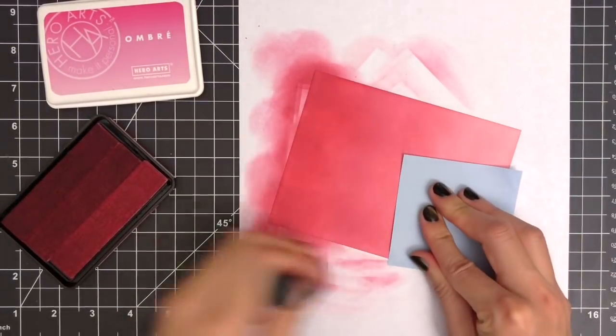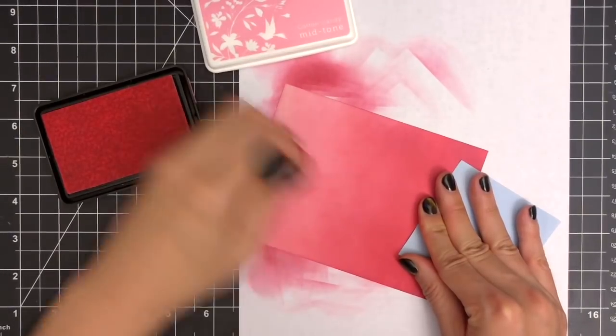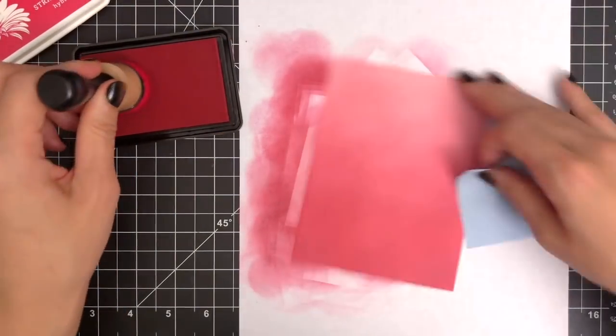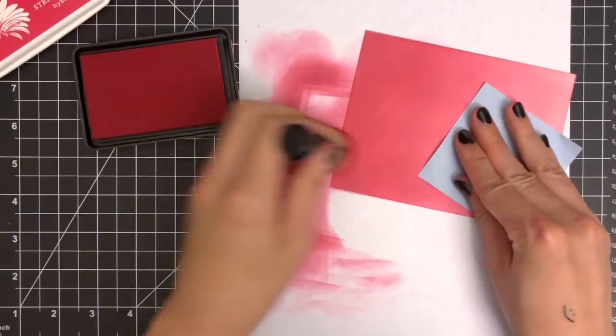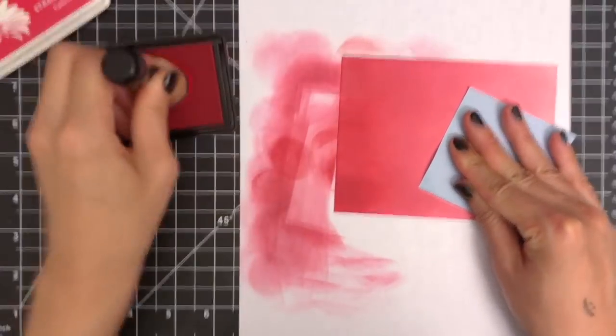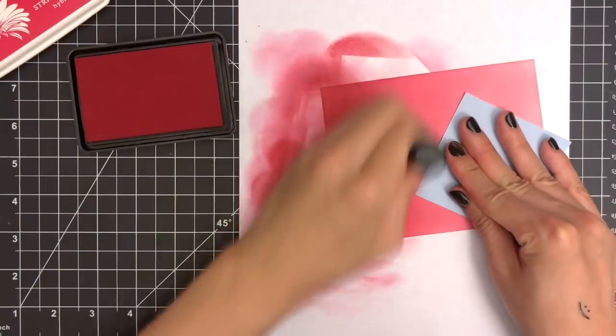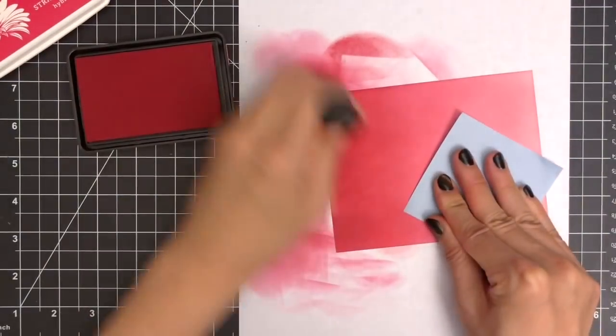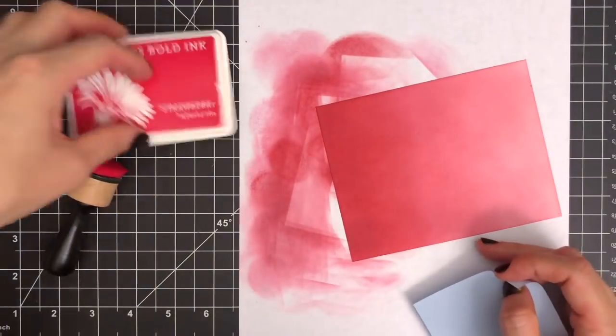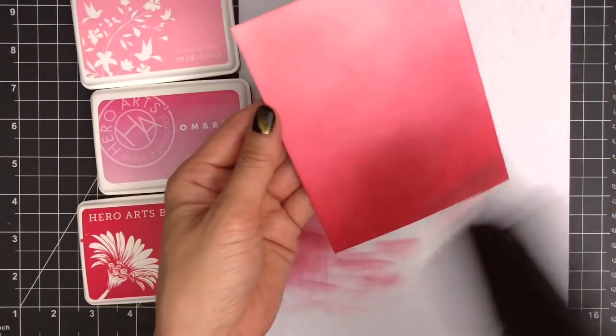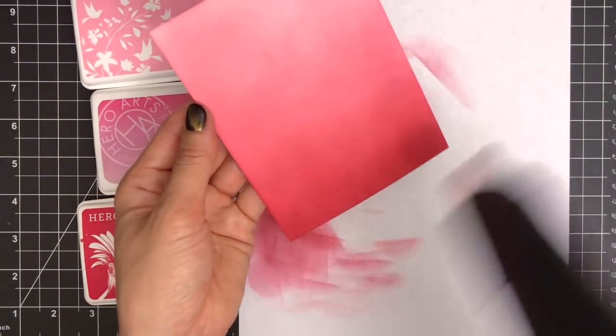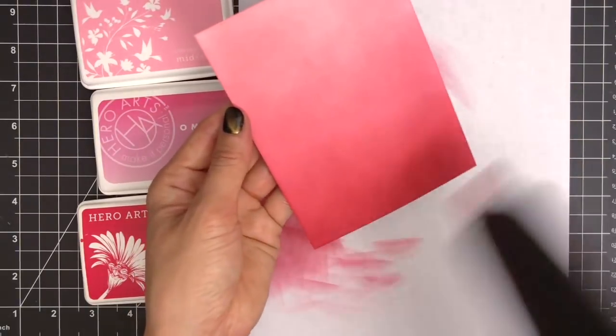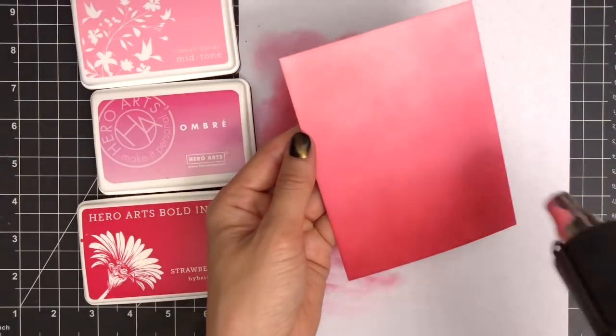I'm going to mix the darkest color from Pink to Red Ombre ink and Strawberry Bold ink from Hero Arts to finish off my ombre inked background. I'm going to keep applying ink to smooth the harsh lines. Once my ink blending is done, I'm going to dry my panel with a heat tool to make sure the inked background is completely dry. You can just set it aside to air dry if you want to.